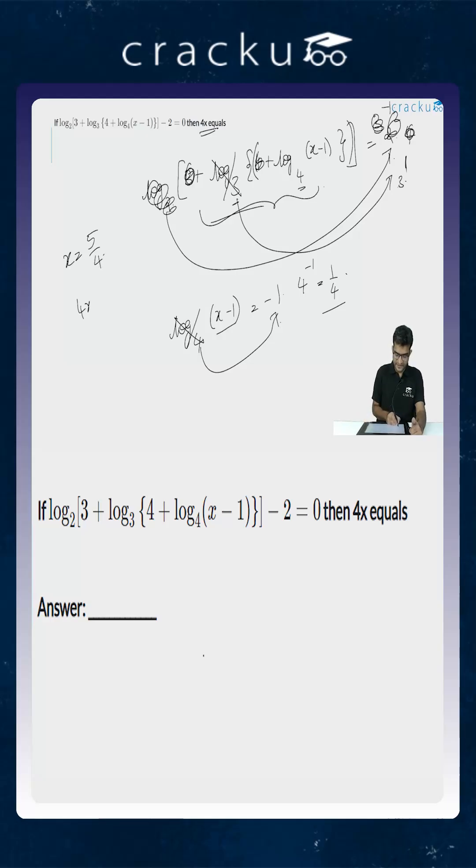So the value of 4x will be equal to 5. So the correct answer for this question is that the value of 4x is equal to 5.